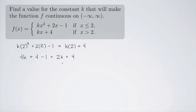I can subtract 2k from both sides, so I get 2k on this side and 4 minus 1 is 3 equals 4. I can subtract 3 from both sides, so I get 2k equals 1.